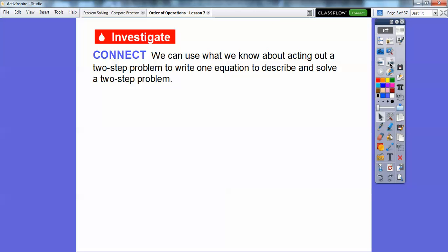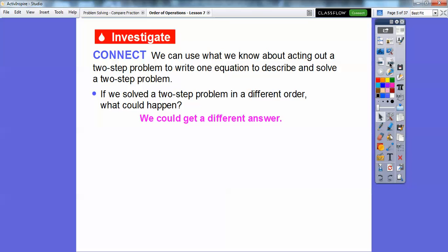Here's a connection here. We can use what we know about acting out the two-step problems, which we did in the last lesson, to write one equation to describe and solve a two-step problem. So what does that mean? Well, if we solved the two-step problem in different orders, what could happen? We could get different answers. Sometimes you won't, but most of the time you will.